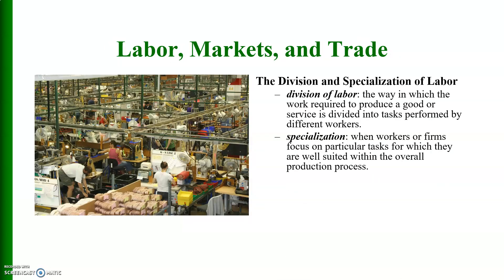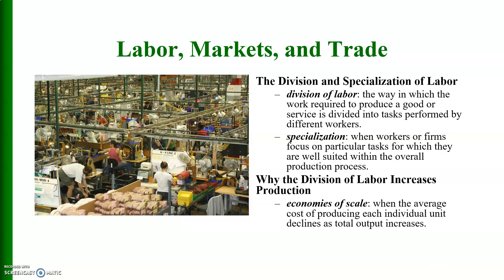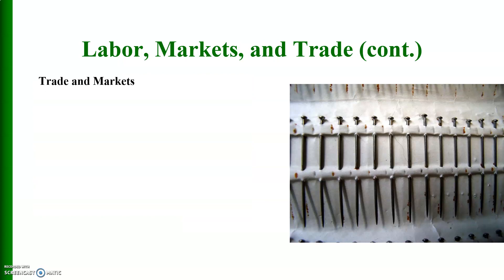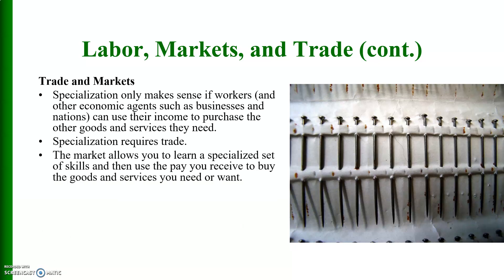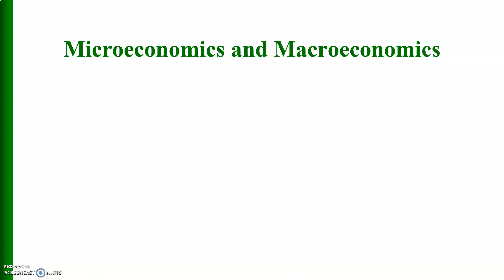Labor markets and trade: there is the division of labor and specialization of labor. The division of labor increases production through economies of scale. Specialization only makes sense if workers and other economic agents — such as businesses and nations — can use their income to purchase other goods and services they need. Specialization requires trade. The market allows you to learn a specialized set of skills and then use the pay you receive to buy the goods and services you need or want. This is how our modern society has evolved into a strong economy.